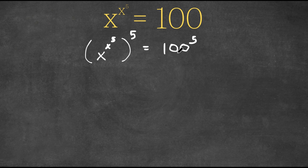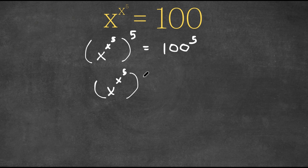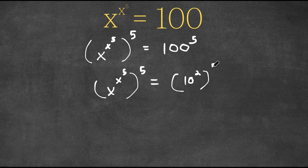Now I'm going to change the 100 to 10 squared. So now we have x to the power of x to the power of 5, all to the power of 5, and this is equal to 10 squared to the power of 5.